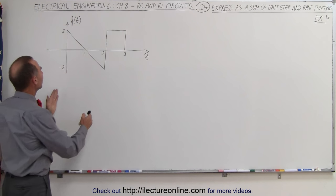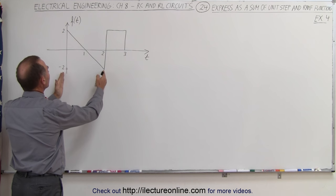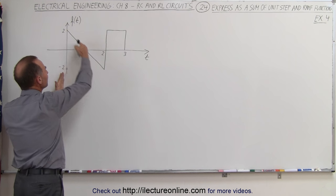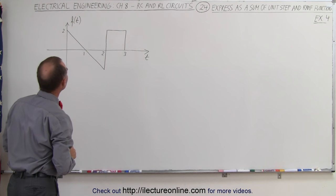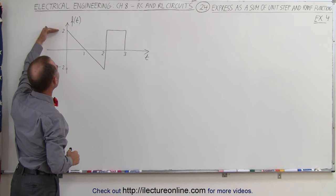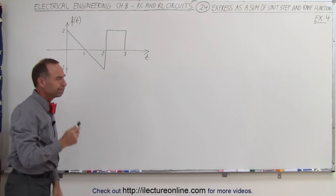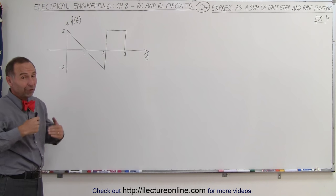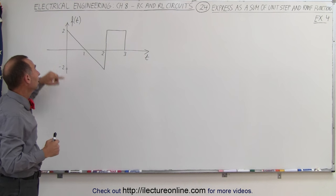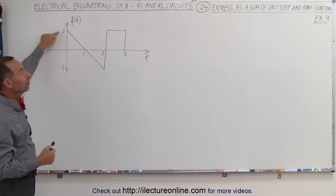Let's first take care of the first two seconds. Notice that the slope remains the same all the way through and we start at a magnitude or an amplitude of 2. How do we do that? Well first we need to get up to an amplitude of 2, for that we need to use a unit step function.